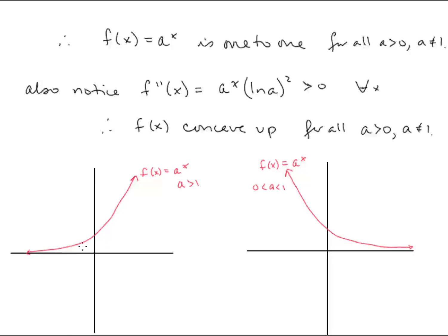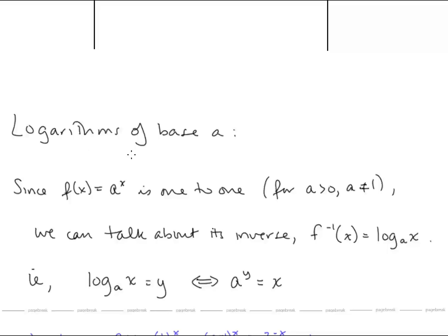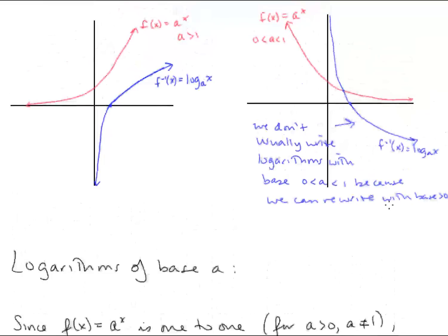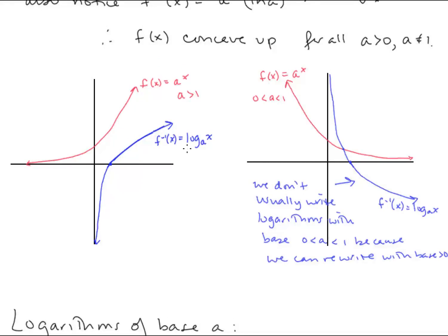When a is greater than 1, we have an increasing exponential function, and when a is between 0 and 1, we have a decreasing exponential function. Now let's look at logarithms of base a. Since f of x equals a to the x is a one-to-one function, we can talk about its inverse, which we call log base a of x. Log base a of x equals y is equivalent to a to the y equals x. For a greater than 1, the graph of log base a of x is increasing; for a between 0 and 1, the log function is decreasing.